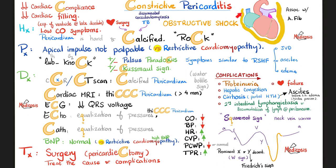Imaging: chest X-ray or CT scan shows thick, calcified pericardium — calcium appears white. This is sometimes called the 'water bottle sign,' where the heart is the water and the calcified pericardium is the bottle wall. Cardiac MRI shows pericardial thickness greater than 4 mm. EKG shows diminished QRS voltage — decreased amplitude — because the thick pericardium blocks the electrical impulse from reaching the chest electrodes.